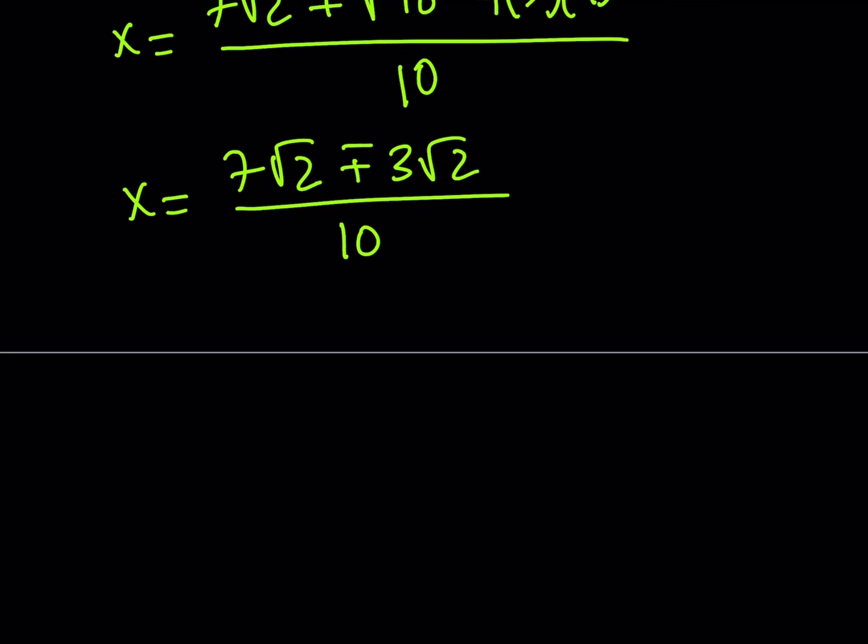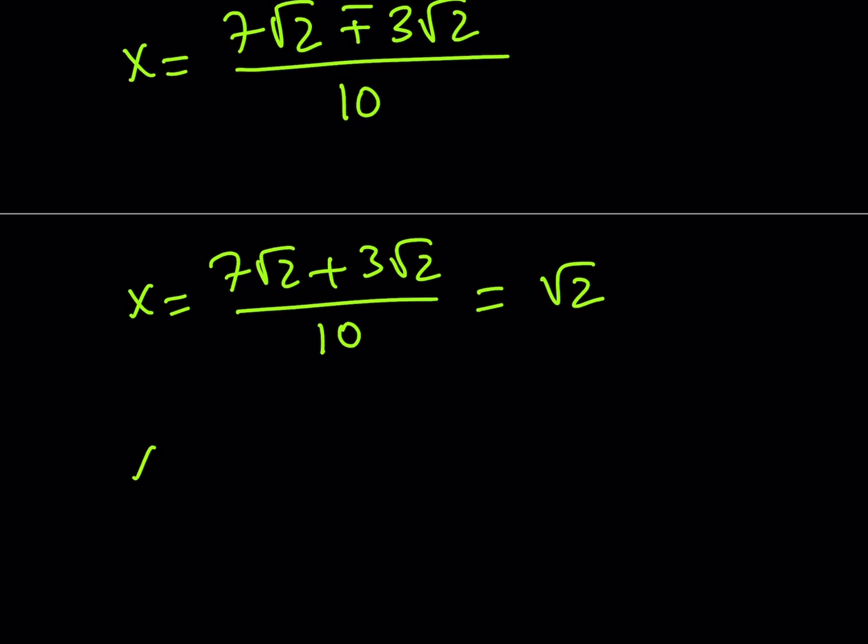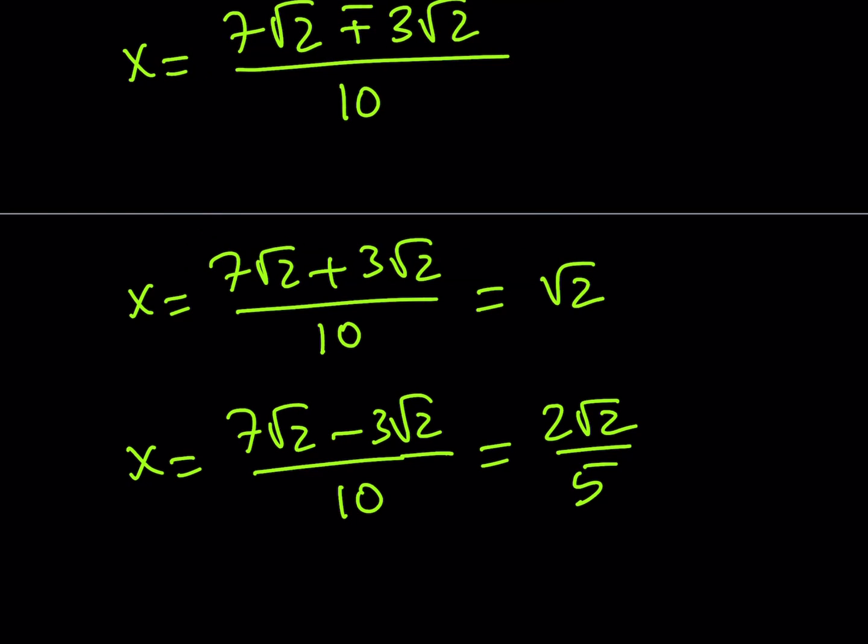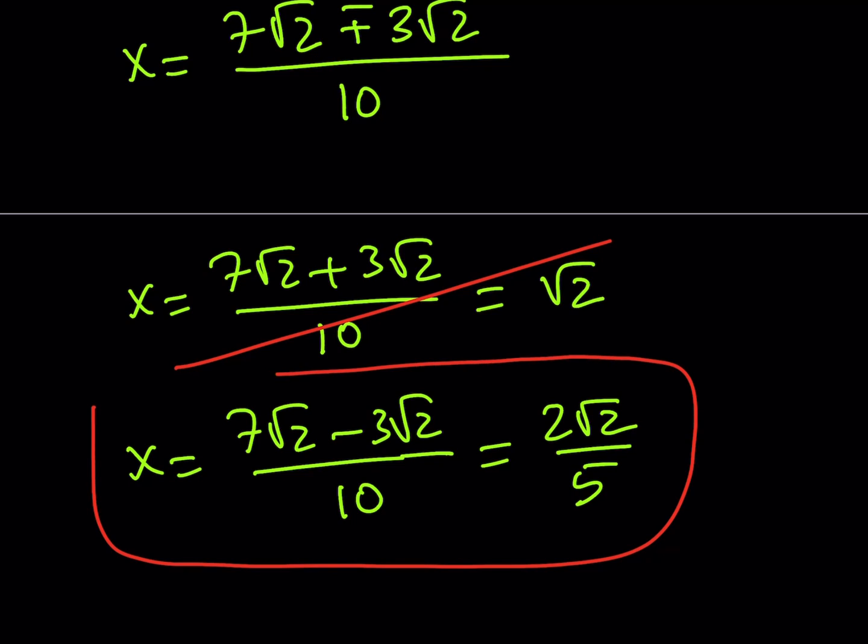Now, at this point, you can just split the solutions. One of them is going to be 7 root 2 plus 3 root 2 over 10, which means this is going to be 10 root 2 over 10, which is root 2. That's going to be one of the solutions. The other solution is going to come with the minus sign. And that is going to equal 4 root 2 divided by 10, which is 2 root 2 over 5. Now we have two solutions. Which one do we use? Now, if you go back to the original problem, remember that the height was 1 and the height is greater than the diagonal of the square. So in other words, the diagonal of the square needs to be less than 1. If you divide that by root 2, it means that the side length for the square needs to be less than root 2 over 2. So in other words, root 2 is not acceptable. So what are we going to do? We're going to go with 2 root 2 over 5, which is the side length of the square.